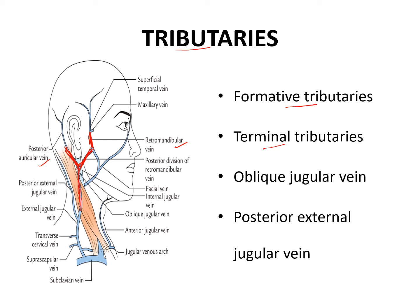The terminal tributaries are: the anterior jugular vein, the transverse cervical vein, and the suprascapular vein. We also have the oblique jugular vein, which opens into the internal jugular vein. Additionally, there is the posterior external jugular vein, which drains blood from the lower aspect of the scalp, runs parallel to the sternocleidomastoid muscle, and opens into the external jugular vein.